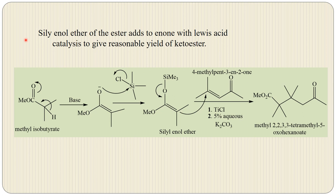Next, silyl enol ethers of esters add to enones with Lewis acid catalysis, giving a reasonable yield of keto ester. Here, methyl isobutyrate in the presence of base has the hydrogen extracted. When it reacts with trimethylsilyl chloride, the oxygen attacks silicon and chlorine leaves, giving the silyl enol ether. When this silyl enol reacts with the enone in the presence of Lewis acid, conjugate addition takes place and the product is obtained.